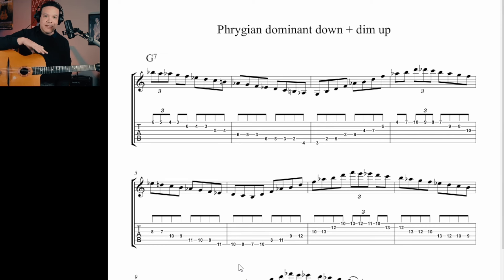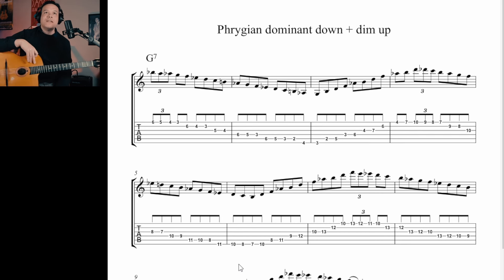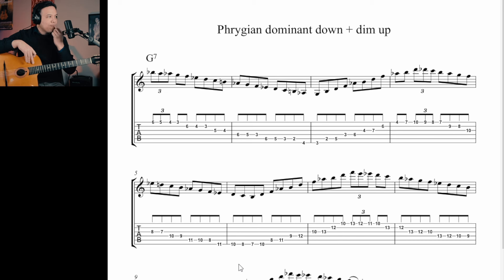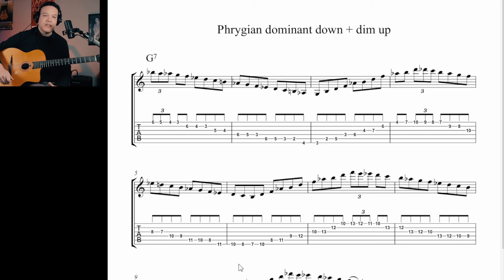So what is a Phrygian dominant scale? It's a mode of the harmonic minor scale. I think it's the fifth mode of the harmonic minor scale — but forget about that right now. We're just going to focus on the fingerings, because in the end that's what I'm using. I'm using pretty much the same fingerings that Stochelo uses, or Moses, or Paulus, or Jimmy. I just added one more.